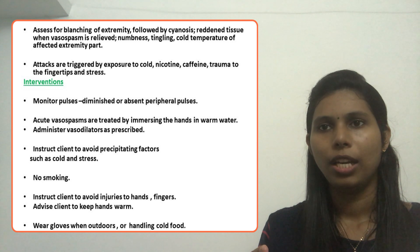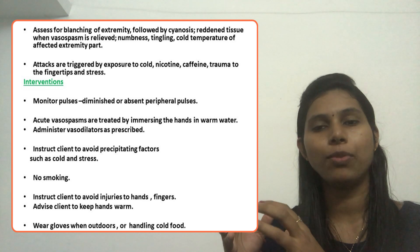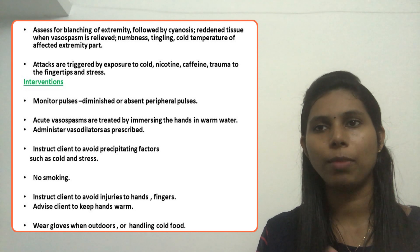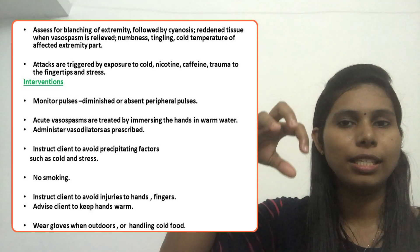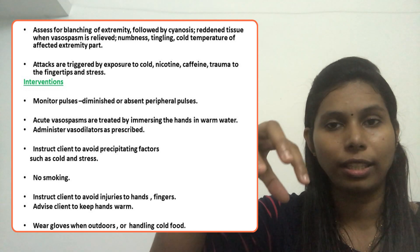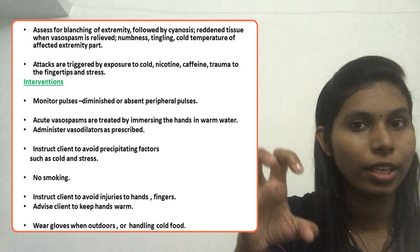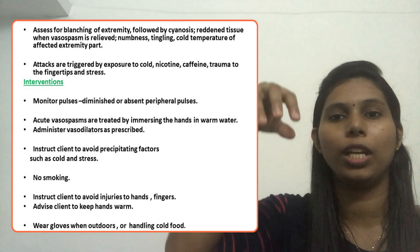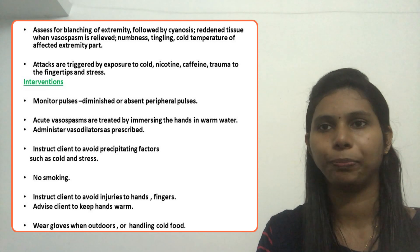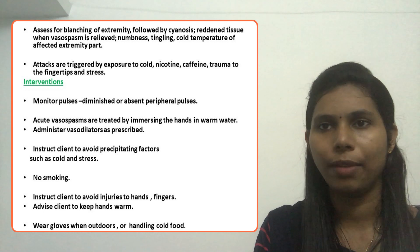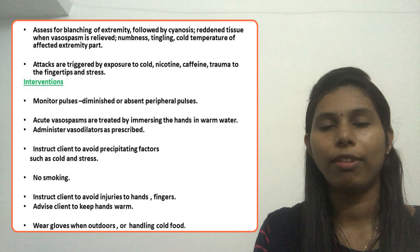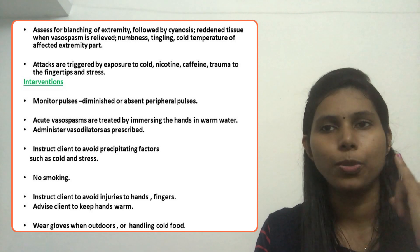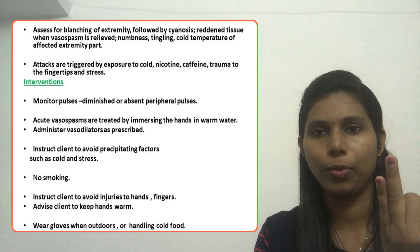Now we will see some of the interventions. We should look for diminished or absent peripheral pulse. Acute vasospasm is treated by immersing the hands in warm water — not hot water — slightly warm water to recover from the acute vasospasm. Then administer vasodilators as prescribed. Instruct the client to avoid precipitating factors such as stress and cold. No smoking because of nicotine, and avoid injuries as they will also exacerbate the condition.